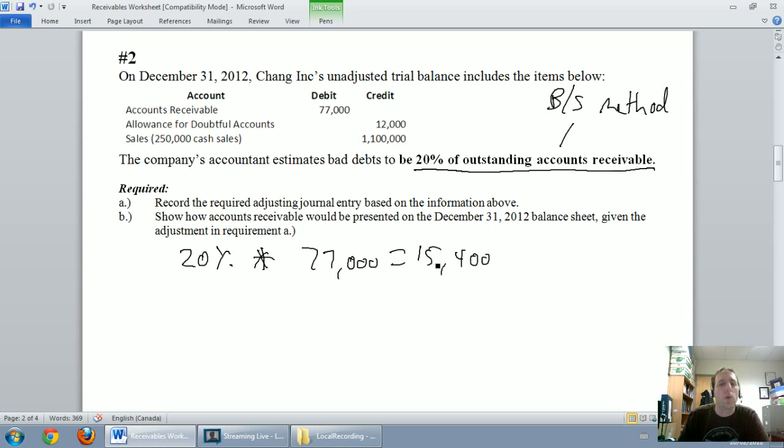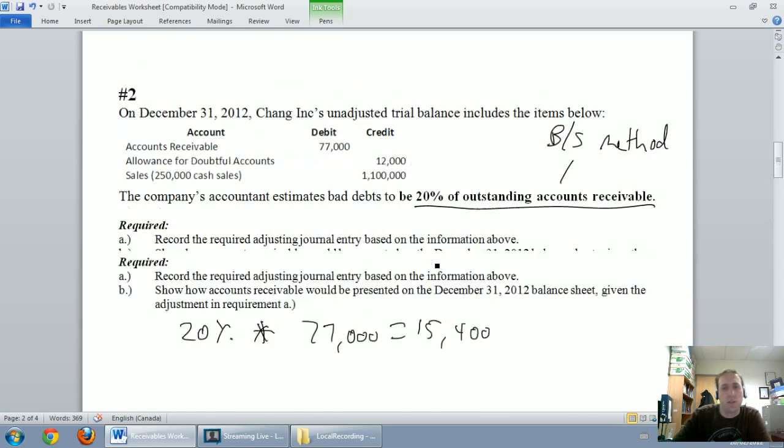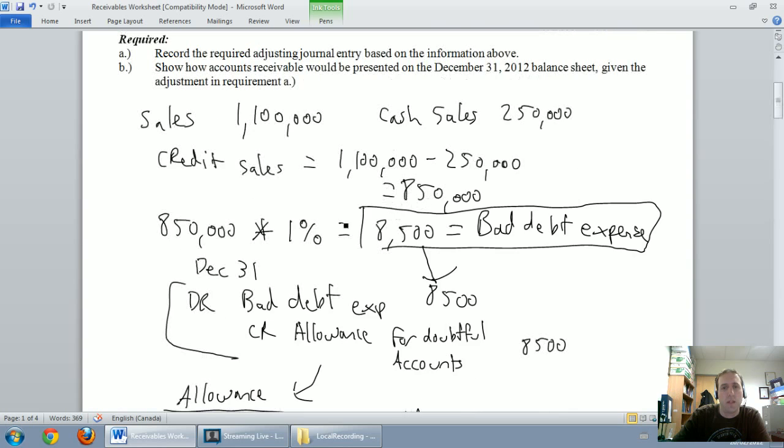Okay, so when we took a percentage of sales, I'm going to scroll back up to that last problem. I said, okay, we took a percentage of our credit sales, $8,500, and I said that's our bad debt expense. Great. That's the income statement method.